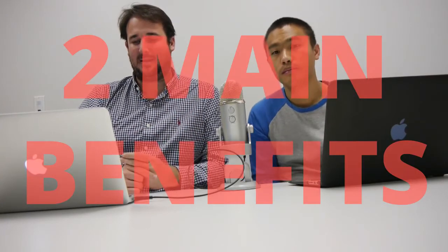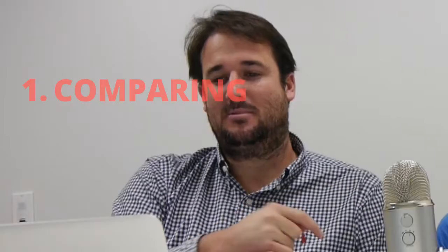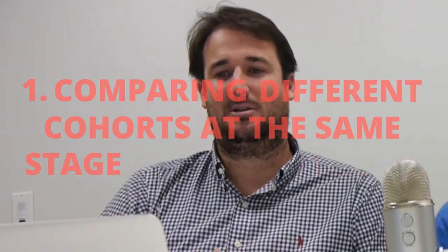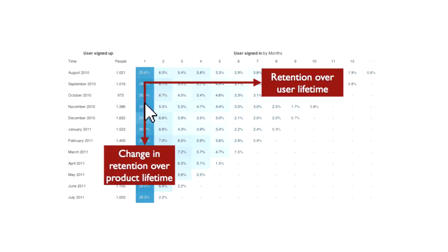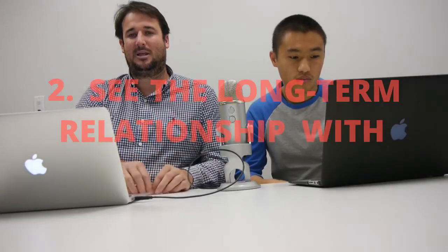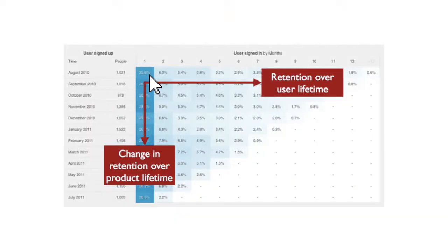This chart has two really big main benefits. One, we can compare different cohorts or groups of users at the same stage in their life cycle. So that would be looking down from top to bottom on the chart — we can see for all the cohorts what percentage were coming back to the site three months after they signed up, and compare how we're doing with our improvement in product and user experience. The second big benefit is we can see the long-term relationship that we have with a given user group — about 25% are coming back after one month, 6% after two months, and we can see how strong that cohort is and how valuable they are.